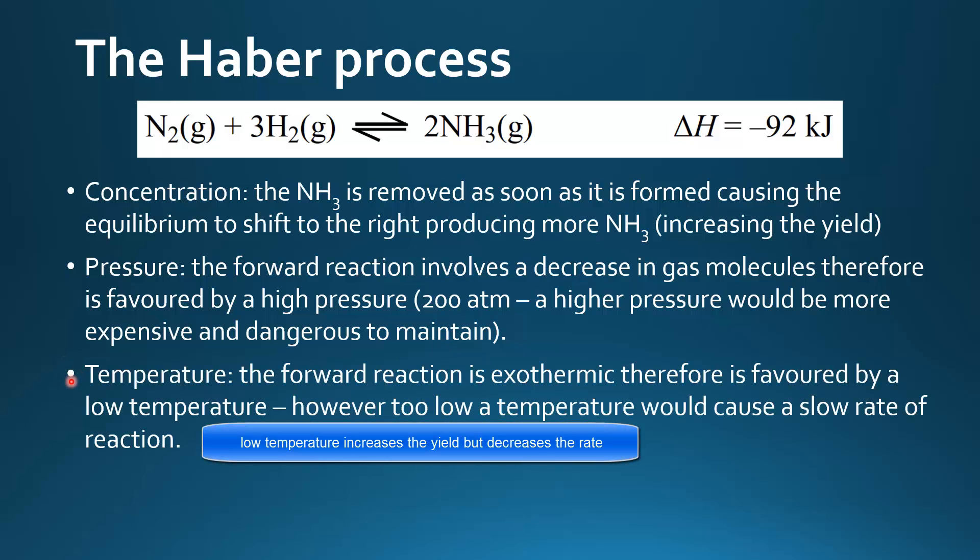Temperature. The forward reaction is exothermic therefore is favored by a low temperature. However too low a temperature would cause a slow rate of reaction.